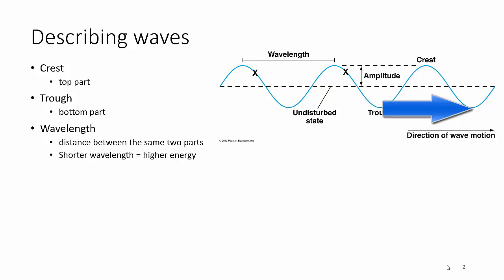Another way to measure wavelength is using the points where the wave crosses the midline — marked with X's. You'll notice it's the same part of the wave in each case.